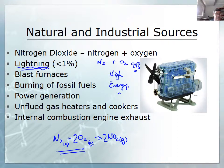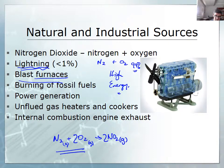Lightning is the highest natural form of energy, but this reaction also occurs in blast furnaces, in the burning of fossil fuels, in power stations for power generation, in unflued gas heaters and cookers, and in internal combustion engines. Anywhere with a large amount of energy or a spark in a small space can combine nitrogen and oxygen to form one of these key oxides.